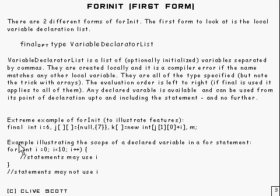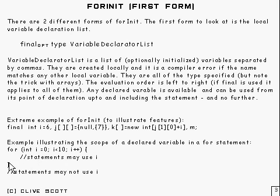Here's a slightly less pathological example — you're more likely to see something like this. 'for (int i = 0; i < 10; i++)' — that's a typical sort of thing. This variable i can be used anywhere within the loop; in fact, it's used in all those parts as you can see. And it's not available outside of that for loop.